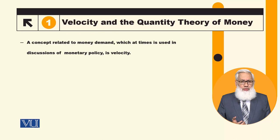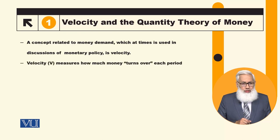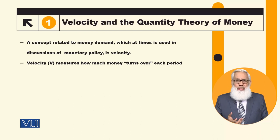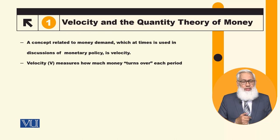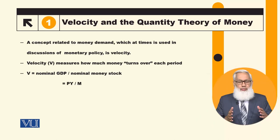The velocity concept is usually discussed in the context of monetary policy. It means that on average, a unit of currency — for example, the rupee — in a particular time period, how many times is a unit of currency used. In simple words, we can say that how much money turns over each period. Velocity means how much money turns over each period, i.e., in a particular time period, for example in a financial year, how much a unit of currency is used.